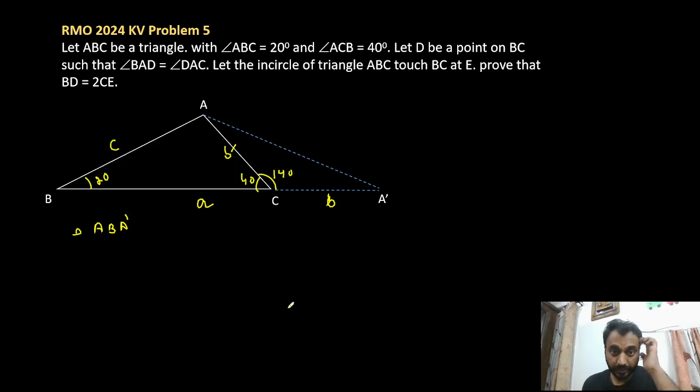Now if you see the triangle ABA', it is an isosceles triangle because angle B and angle A' both are 20 degrees. So I can say that AA' is also equal to c. Now the triangle ABA' is an isosceles triangle and ACA' is also isosceles.